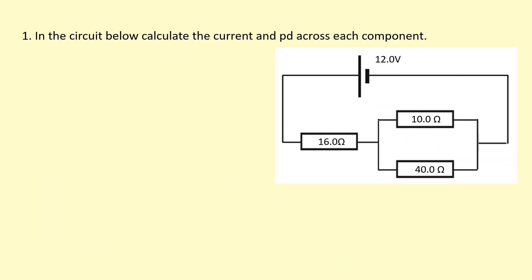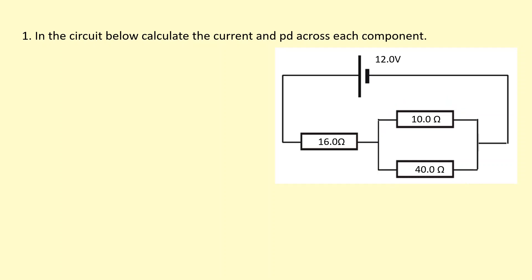In the circuit below, calculate the current and PD across each component. By looking at the circuit, I can see that these two are in parallel with each other. So I'm going to start off by working out the total resistance of that: 1 over 10 plus 1 over 40, and then 1 over that, to get a total resistance of 8 ohms. So this whole combination has 8 ohms resistance.